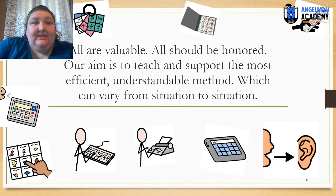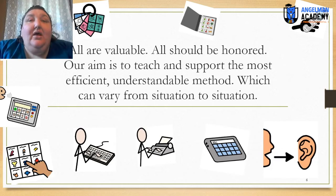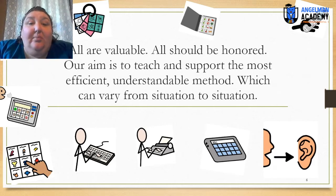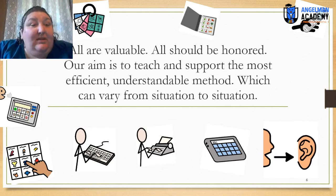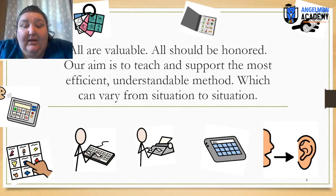Many individuals are quite good at communicating things like wanting a drink by reaching for their cup, pointing to their cup, or pointing to their mouth — or wanting the TV turned on by handing you the remote control. These are perfectly fine methods of augmented communication. We can pair them with something more formal, but in the end the goal is always to be efficient and understandable. Our focus is making sure individuals with complex communication needs with Angelman Syndrome are able to be understood efficiently in their world.